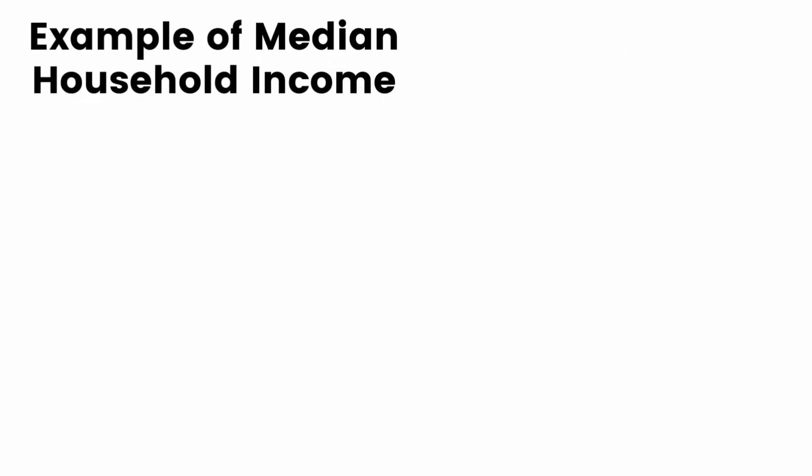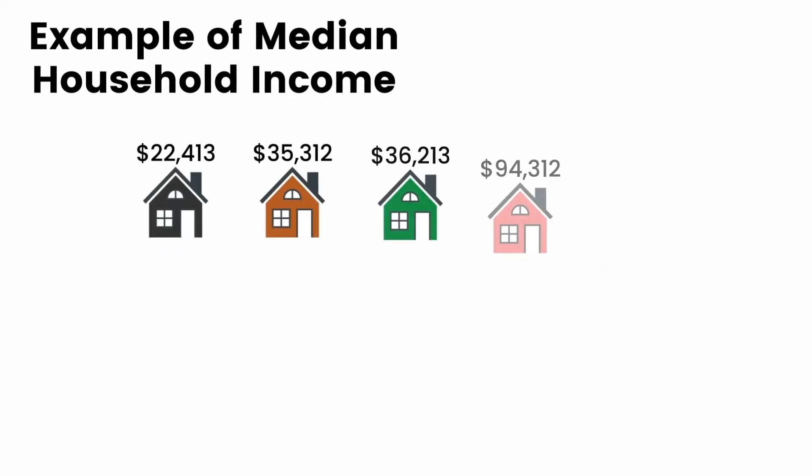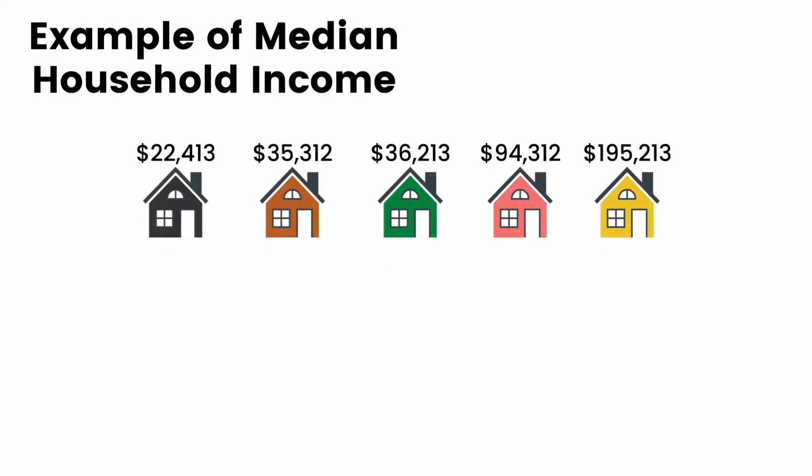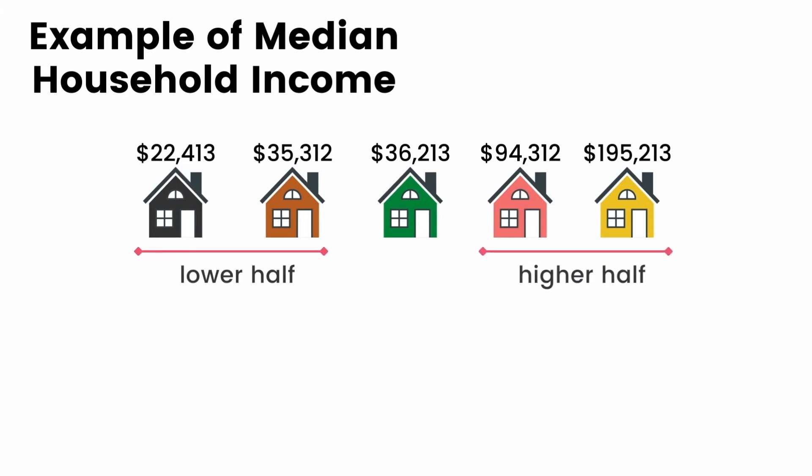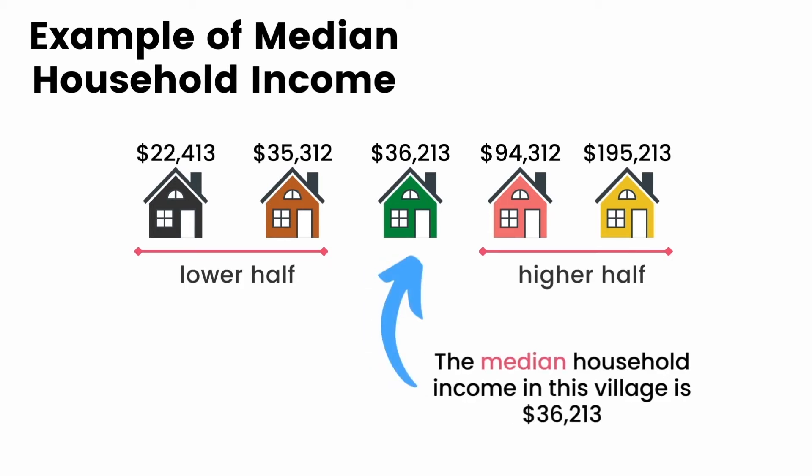Let's look at an example of median household income. Imagine we're looking at a small village with only five households. All we have to do is find the value in between the lower half and the upper half. In this case, the median household income is $36,213.